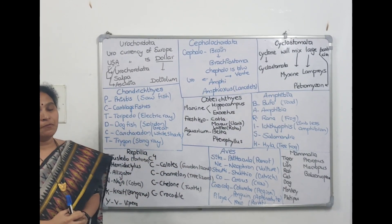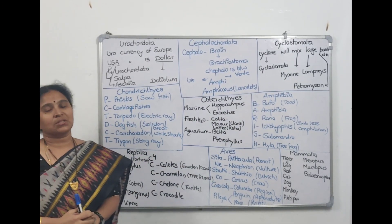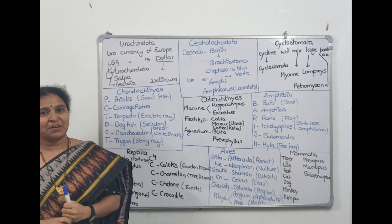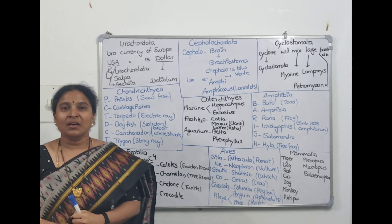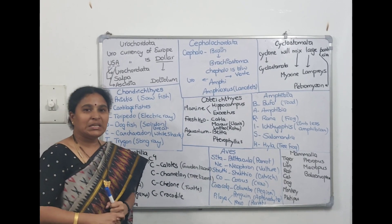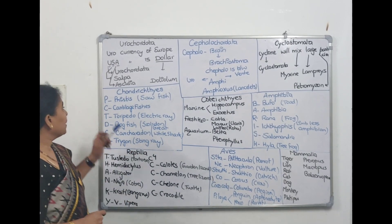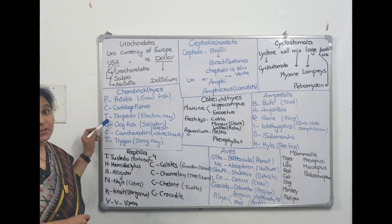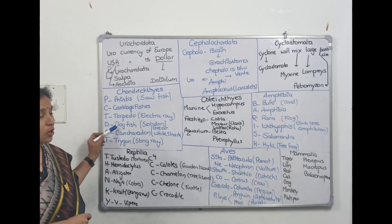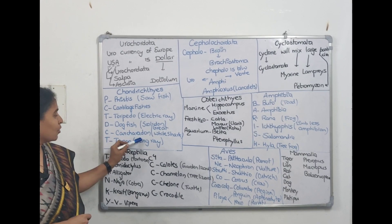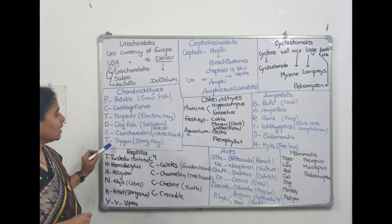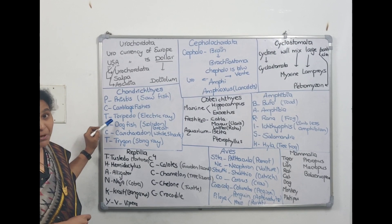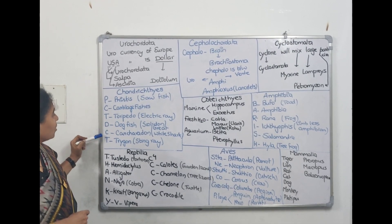Now coming to Chondrichthyes — cartilage fishes. The code for cartilage fishes is PCT DCT. In nephrons we have two parts: Proximal Convoluted Tubule and Distal Convoluted Tubule. Here we use the same codes PCT and DCT. P for Pristis, C for cartilage fishes, T for Torpedo, D for Dogfish, C for Carcharodon, and T for Trygon.